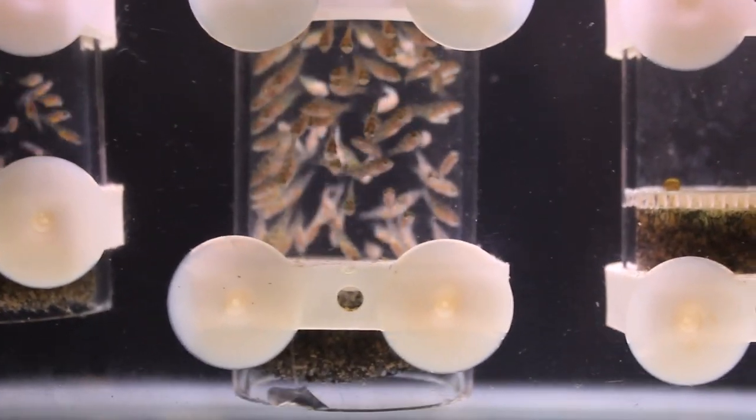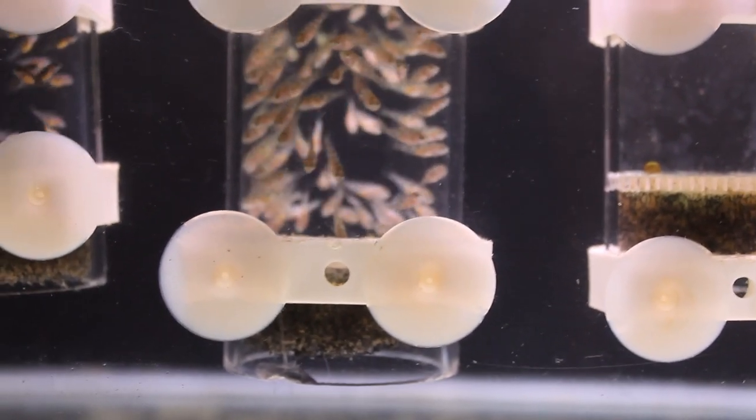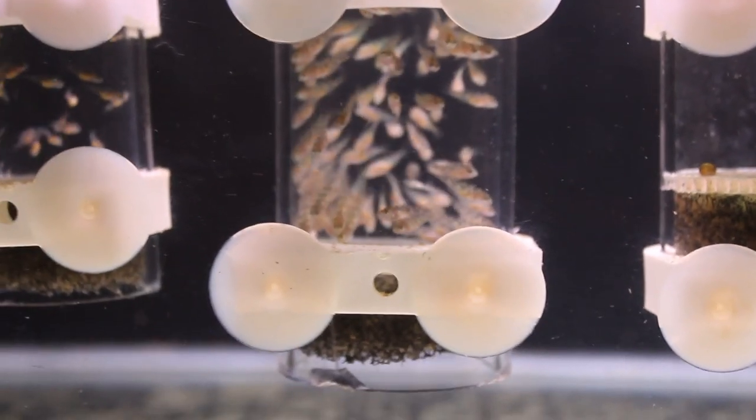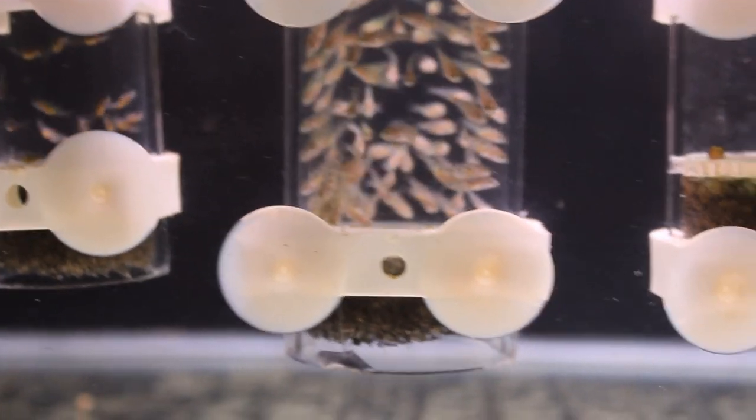Because the bigger fish will eat them straight away, no doubt. I'm talking about African cichlids here. Most of them are predators, they eat smaller fish.